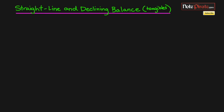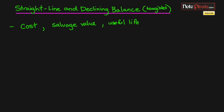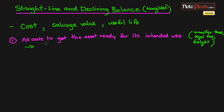Before we calculate depreciation expense, let's talk about the three things you'll need: your cost, your salvage value, and your useful life. First, the cost is all the costs to get the asset ready for its intended use. That means certain expenses like transfer taxes, legal fees to get a building in your name or transfer the title, or freight expenses to ship a piece of equipment — you can capitalize all of those costs to the asset.